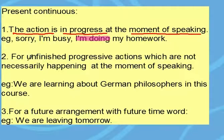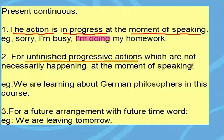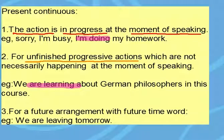Secondly, we can use the present continuous when we are talking about unfinished progressive actions, and these actions are not necessarily happening at the moment of speaking. To clarify this point, here is an example: 'We are learning about German philosophers in this course.' Learning is not happening right now at the moment of speaking — in other words, it is happening over a period of time.